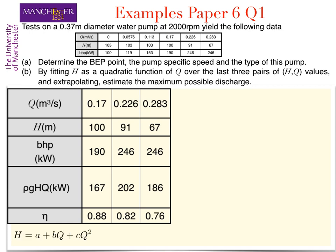A quadratic equation is of course a plus bQ plus cQ squared and thus a quadratic equation for the head in terms of the flow rate can be written in general as a plus bQ plus cQ squared.